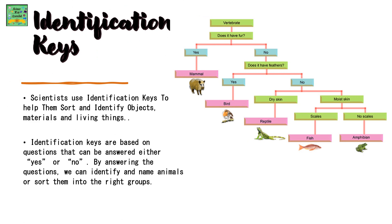Identification keys: scientists use identification keys to help them sort and identify objects, materials and living things. Identification keys are based on questions that can be answered either yes or no. By answering the questions, we can identify and name animals or sort them into the right groups.